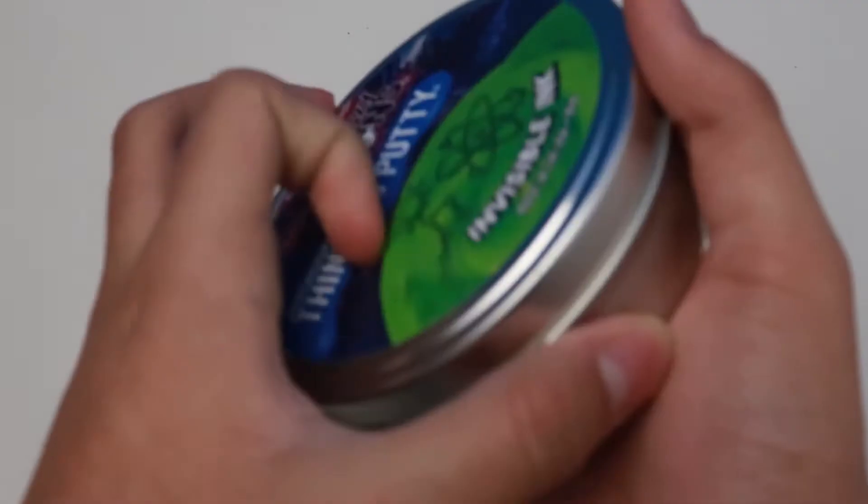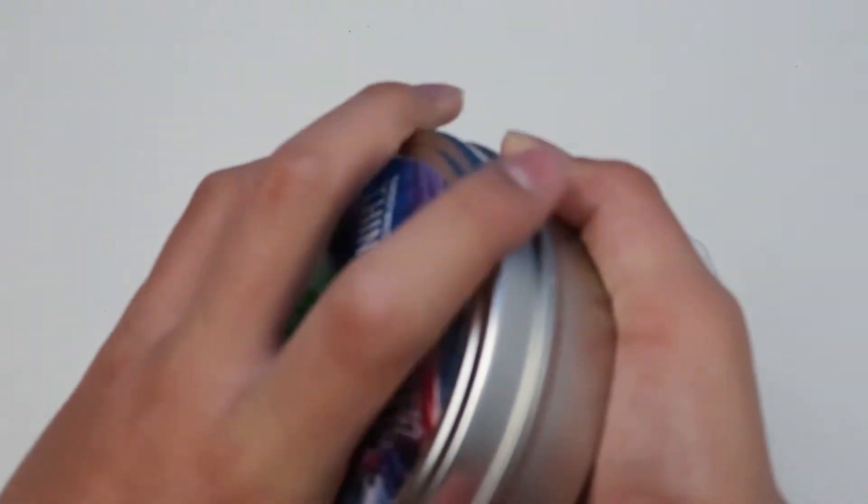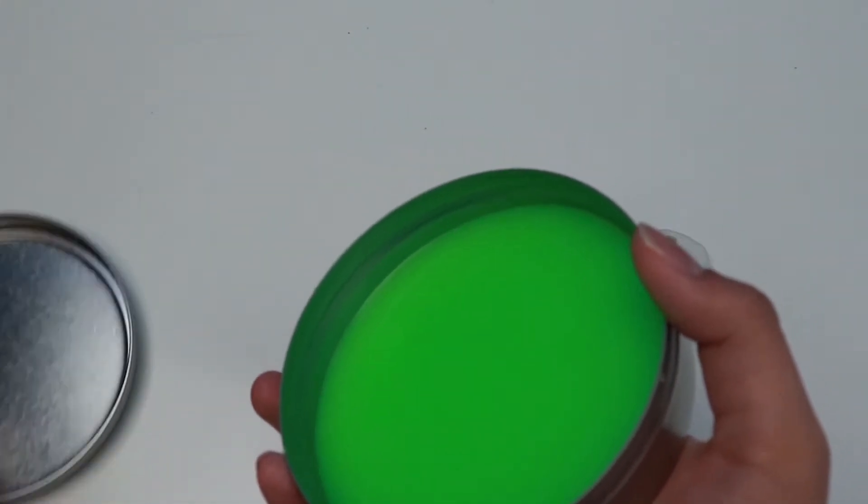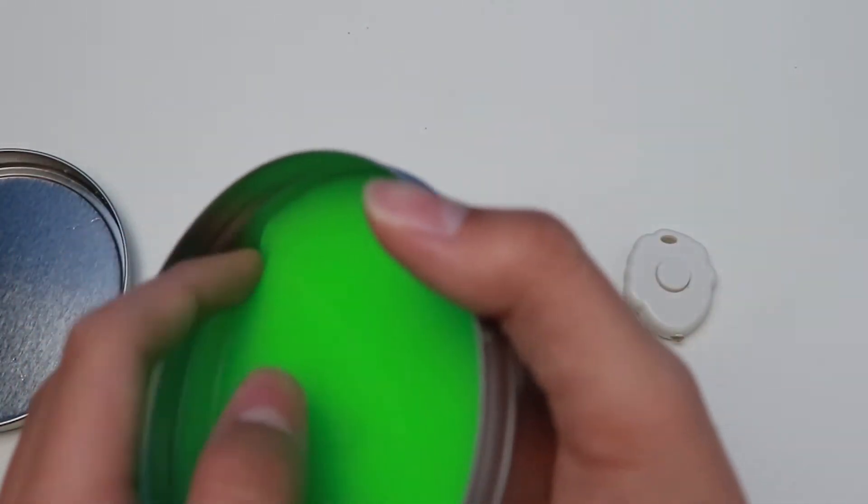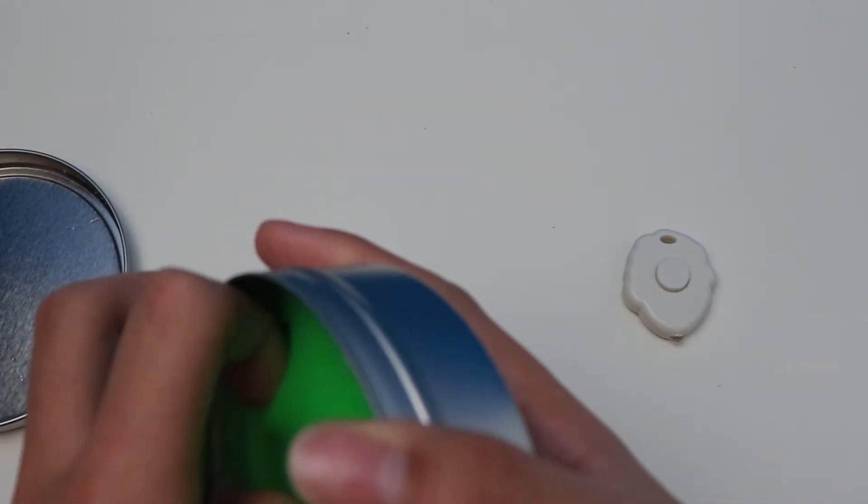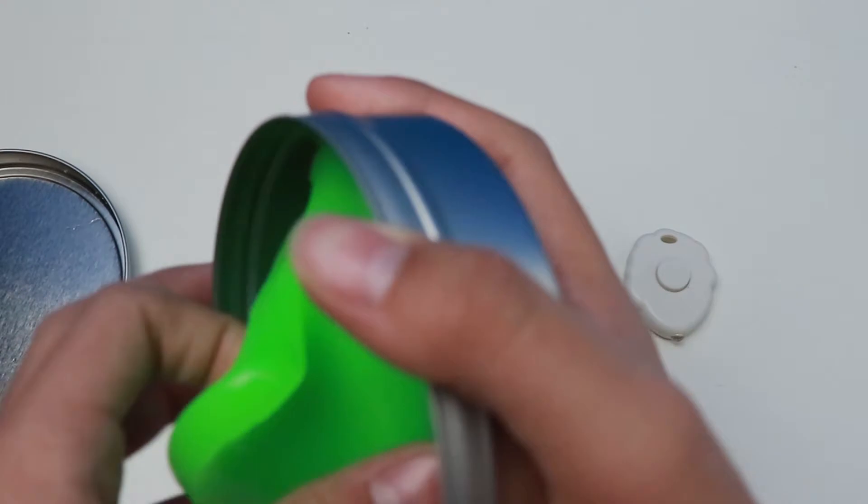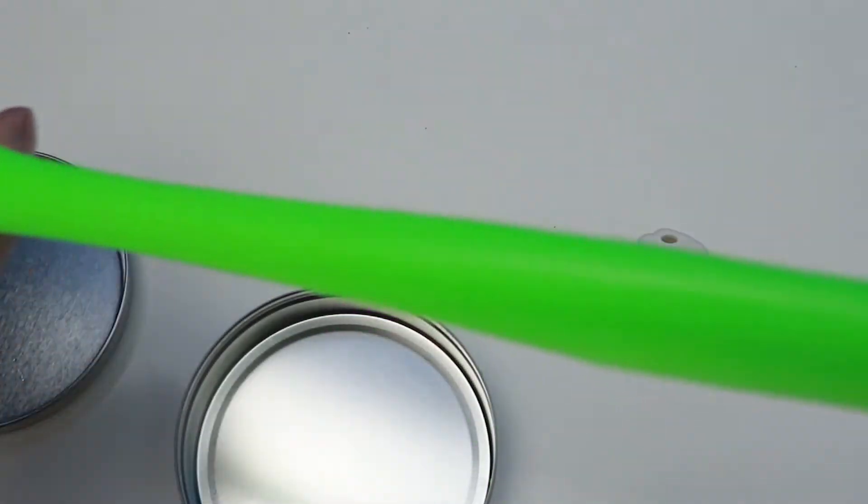Alright, let's check this out. Wow, this Invisible Ink Thinking Putty color is black with multicolor glitter and glows red, blue, green, cosmic. And the color looks like green. This is awesome. So this is the color looks like green.